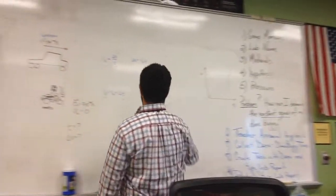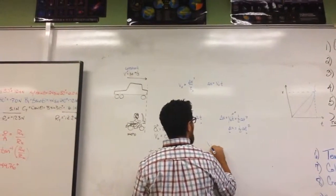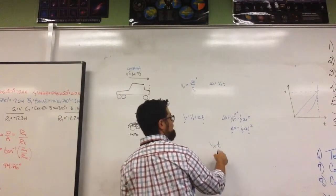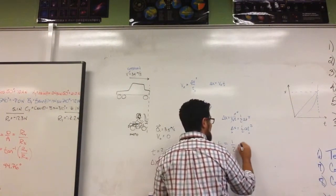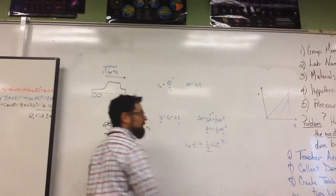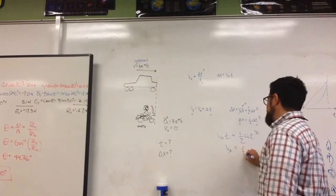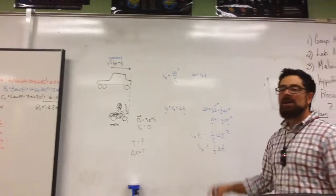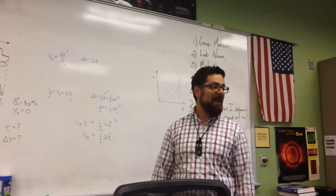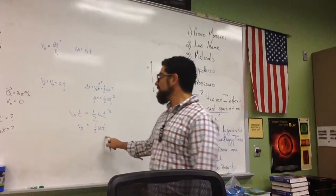Algebraically, by setting delta x equal to delta x, that becomes vx of the truck times time is equal to one-half a-t squared, where a is the acceleration of the motorcycle. I divide both sides by t, I get vx is equal to one-half a times t, because I eliminate one of those t by dividing both sides by t. Solving for t...